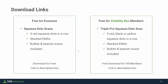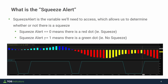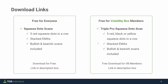Just like that, you've learned how to build your very own squeeze scan, taking advantage of the squeeze alert variable and using the sum function to easily scan for five or more red squeeze dots in a row. Now that you know this skill, you can think about different patterns you can scan for and play around with the squeeze indicator further. For all volatility box members, be sure to check out the pro version of this tutorial for more patterns and combinations. Take care everyone, good luck trading, and I'll see you in the next update.